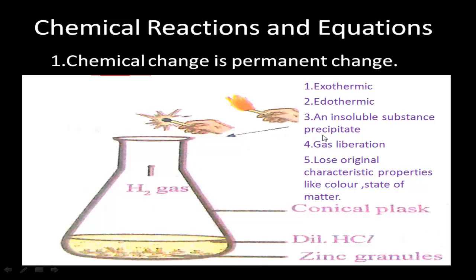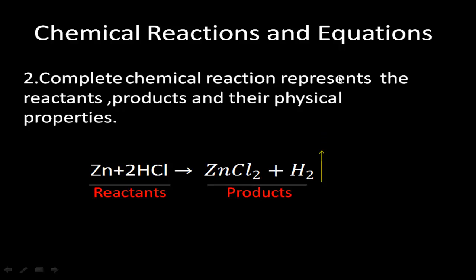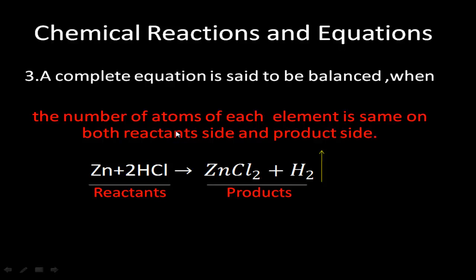The second concept: a complete chemical reaction represents the reactants, products, and their physical properties. When writing any chemical reaction, it should include reactants and products along with their physical states — whether it is a gas, solid, liquid, or aqueous solution. A chemical reaction is said to be balanced when the number of atoms of each element is the same on both the reactant side and the product side.